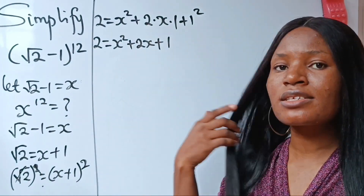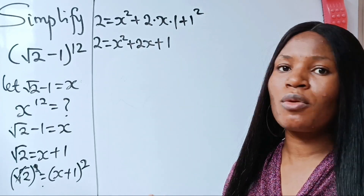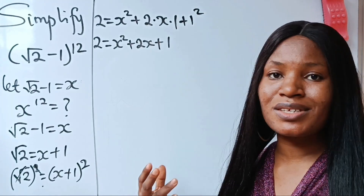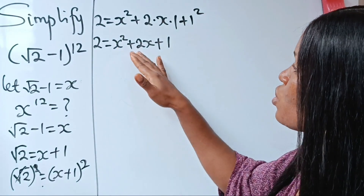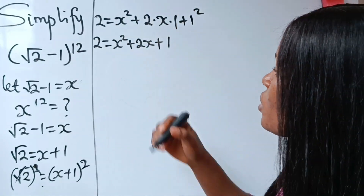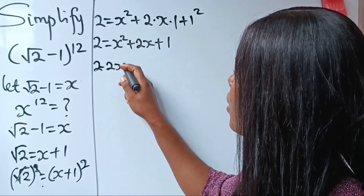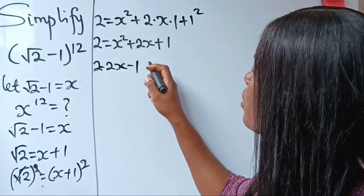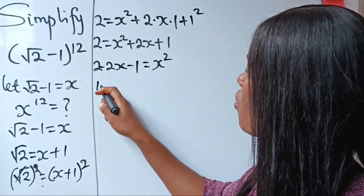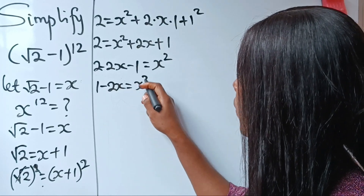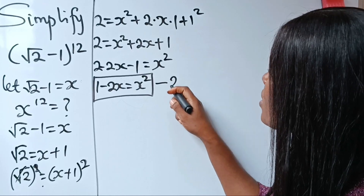Now we are going to bring out x squared — always bring out x squared. To get x squared by itself, we transpose everything to this side: plus 2x becomes minus 2x, plus 1 becomes minus 1. So 2 minus 1 gives us 1, and we have 1 minus 2x is equal to x squared. This is a very important equation, so we are going to call this equation 2.